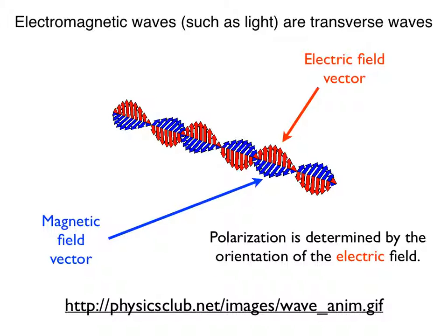As shown in the diagram, electromagnetic waves have a magnetic field vector as well as an electric field vector. The two fields are perpendicular. The polarization of an electromagnetic wave is determined by the orientation of the electric field.